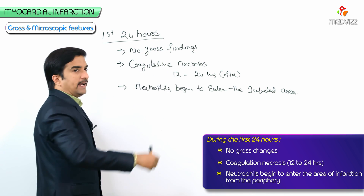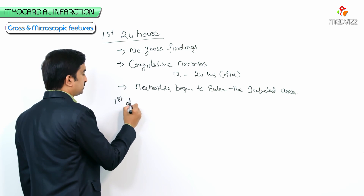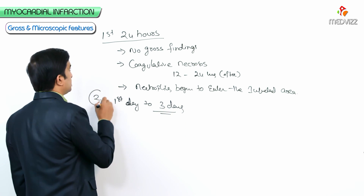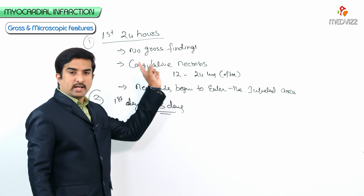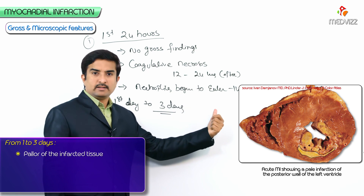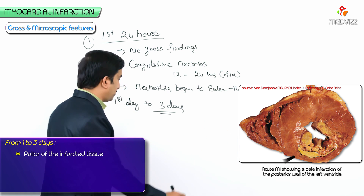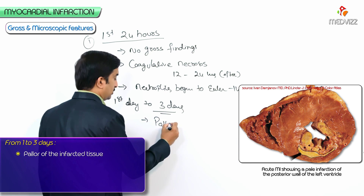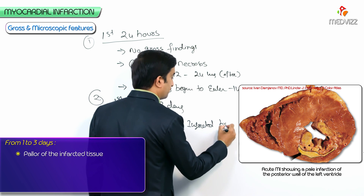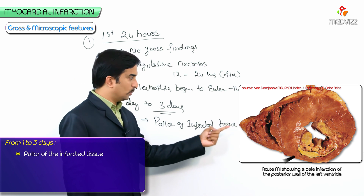From day 1 to day 3, we can clearly identify the coagulative necrosis. You can see the pallor of the infarcted tissue, which is apparent and clearly visible in gross images.